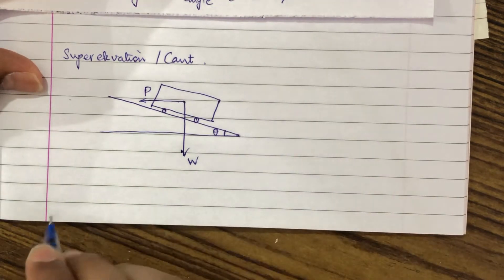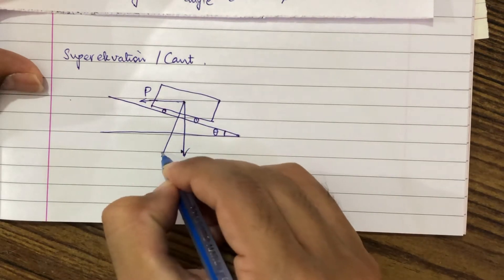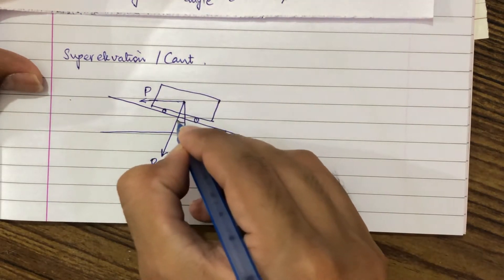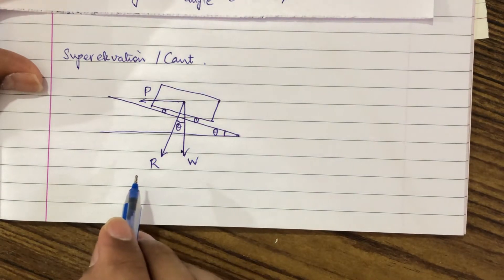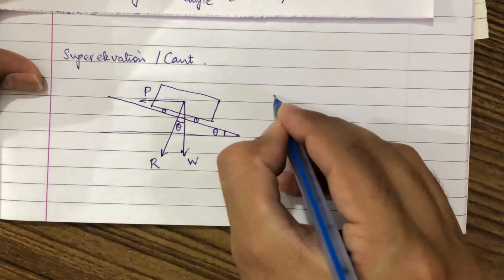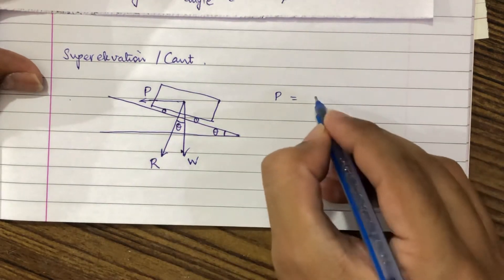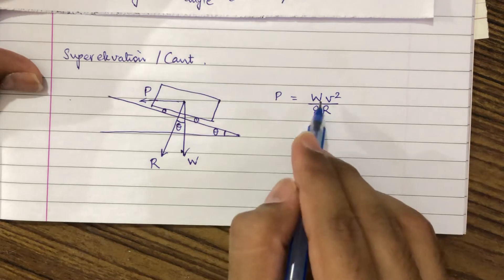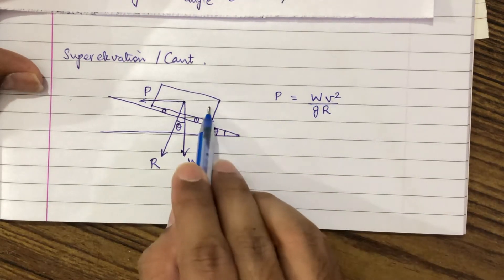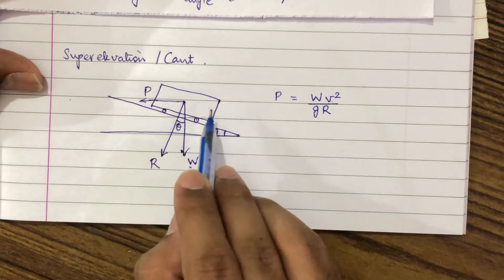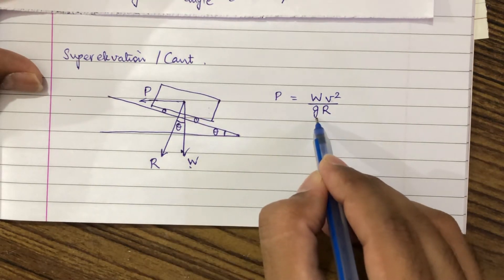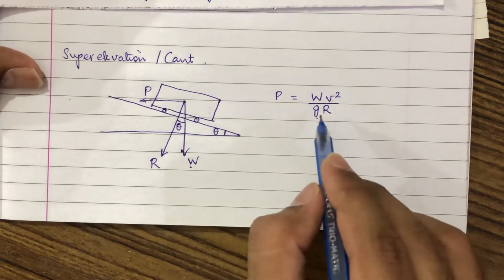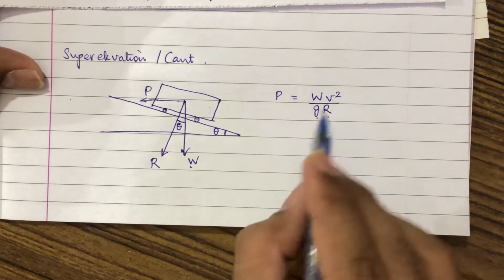Since the centrifugal force always acts perpendicular to the axis of rotation, its direction is horizontal acting away from the center of the curve. The weight of the vehicle acts vertically. So suppose this angle is theta and here there will be a resultant R. The centrifugal force is given by the formula W*V² / (G*R), where W is the weight of the vehicle, V is the velocity, G is the acceleration due to gravity (normally 9.81 m/s²), and R is the radius of the curve.